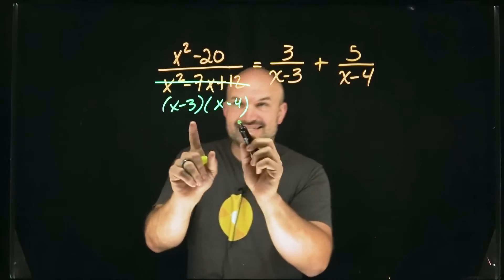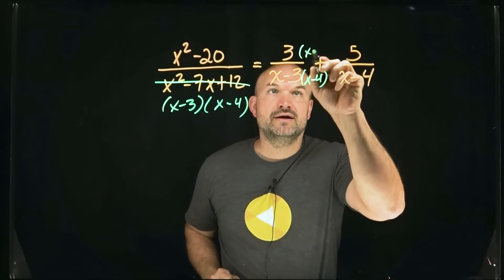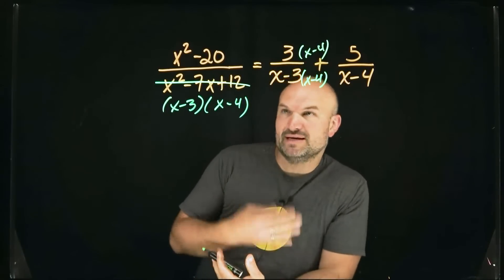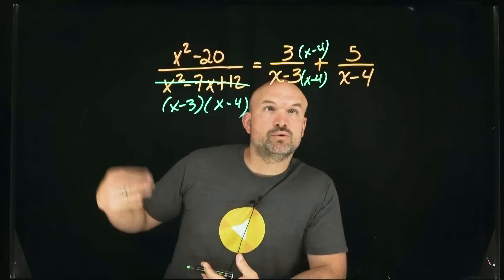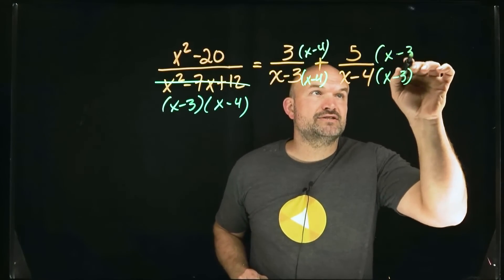So to get this denominator, if I already have an x minus 3, would just be to multiply it by x minus 4 on the top and the bottom. You've got to make sure you multiply on top and the bottom to produce what we call equivalent fractions. Over here, I'm going to multiply by x minus 3 times x minus 3.